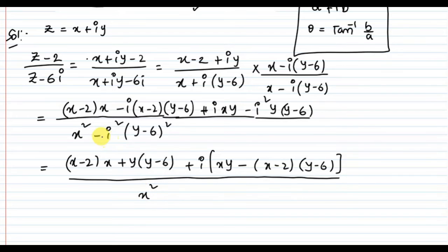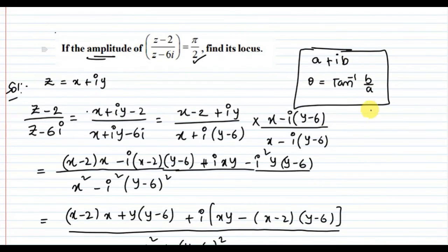The denominator is x² plus (y - 6)² because i² equals minus 1. Now we can clearly see the real part and the imaginary part. From the formula, a is the real part and b is the imaginary part.